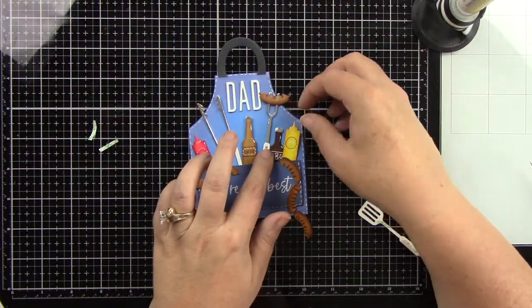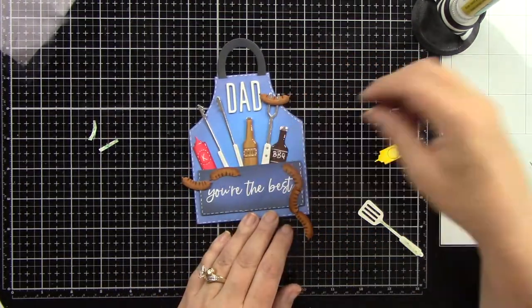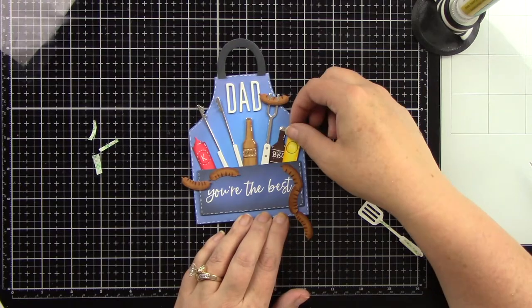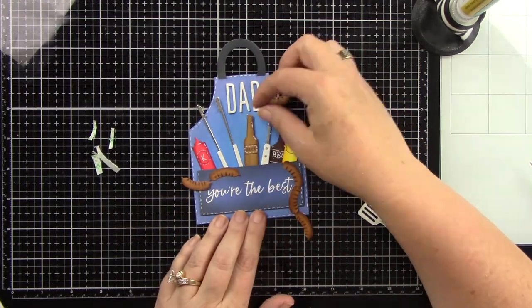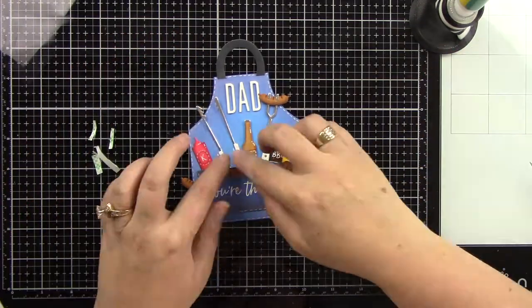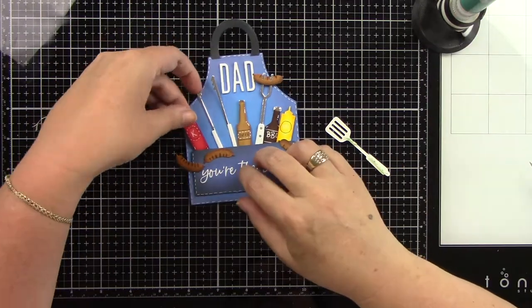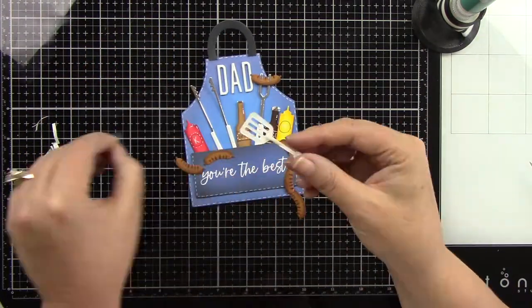Now I've laid everything out, added foam tape behind the pieces that I want. Some of them have foam tape, some I'm just going to use liquid glue, and I'm going to start adhering all of these pieces inside of the pocket. It is turning out so cute. I like the colors with this. The blue is such a guy thing, and then you have that pop of red and yellow, which is really a lot of fun.